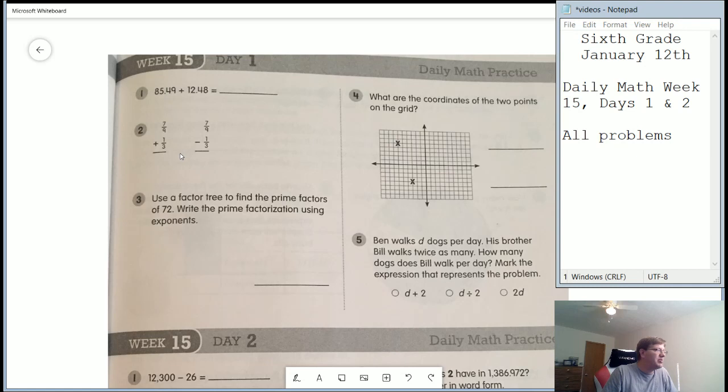For number two, we have two different things. So one of them is going to be if we start with seven ninths and then add one third. And then if we start with seven ninths and then we take away a third. Keep in mind that we need to find an equivalent fraction for our one third that gives us parts over nine so that we can go ahead and work those problems. If you end up with something larger than a whole number, please put that as a mixed number.